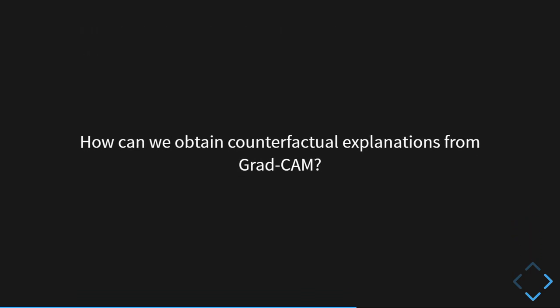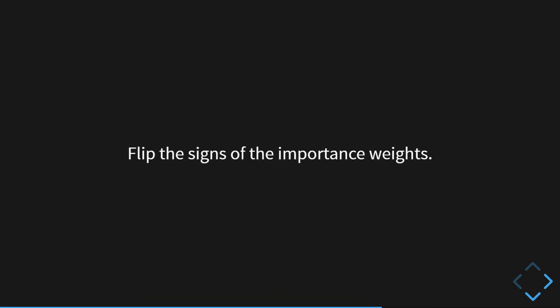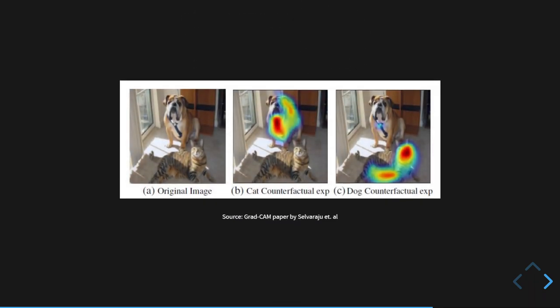So how can we obtain counterfactual explanations from GradCam? Well, we can flip the signs of the importance weights. The features which had a highly negative importance weights earlier which corresponded to competing and background objects will now be given positively high importance rates. So here we now have our flipped importance weights. And using this, as we can see in this image, we get the following counterfactual images.